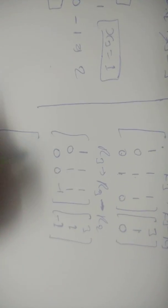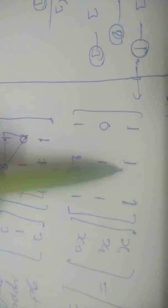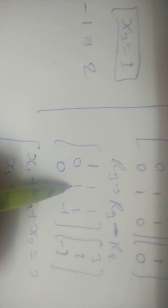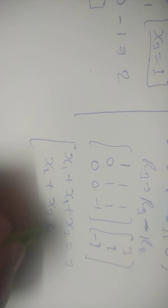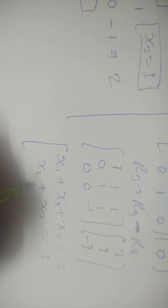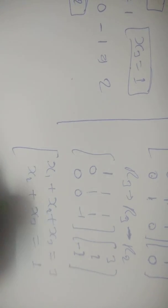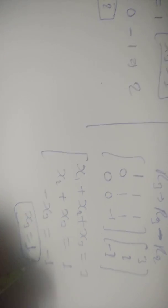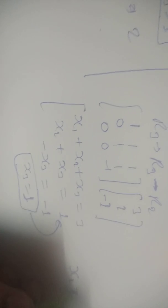Now we read off the equations from the upper triangular matrix. Equation 1: x1 plus x2 plus x3 equals 3. Equation 2: x2 plus x3 equals 1. Equation 3: minus x3 equals minus 1, so x3 is equal to 1. Substituting x3 into equation 2: x2 plus 1 equals 1, so x2 is equal to 0.